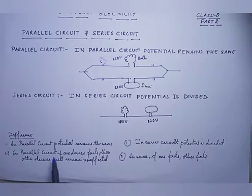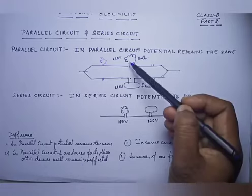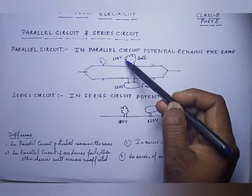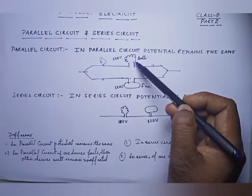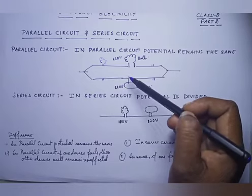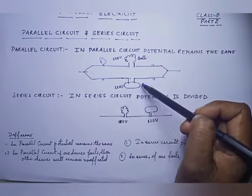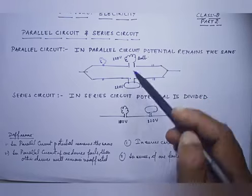Second difference: in a parallel circuit, if one device fails then the other device will remain unaffected. Suppose in this parallel circuit, if this bulb is fused, it will not affect the second equipment. The second equipment is going to carry the same current and it will run — it will not stop.